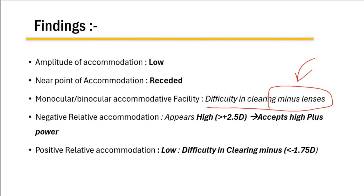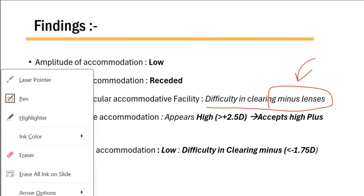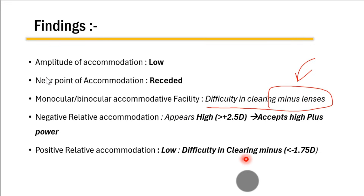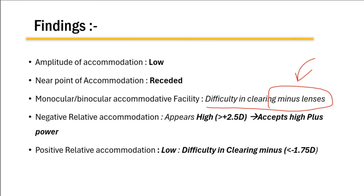The positive relative amplitude of accommodation (PRA) represents how much minus lenses you can add before the patient experiences blur, testing how much you can stimulate accommodation. Since these patients have difficulty stimulating accommodation and low amplitude, the PRA will also be low. They will have difficulty clearing minus lenses and their PRA values will be less than minus 1.75 diopters.